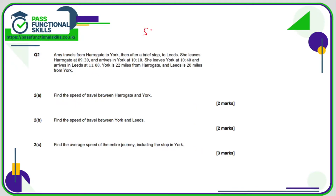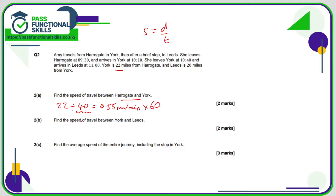So question number 2, again we need to remember speed is distance divided by time. The distance between Harrogate and York is 22, and the time is 40 minutes. So I'm going to do 22 divided by 40, but because this is minutes, my speed is going to be miles per minute — 0.55 miles per minute. So I'm going to multiply that by 60, and 0.55 times 60 comes to 33 miles per hour.